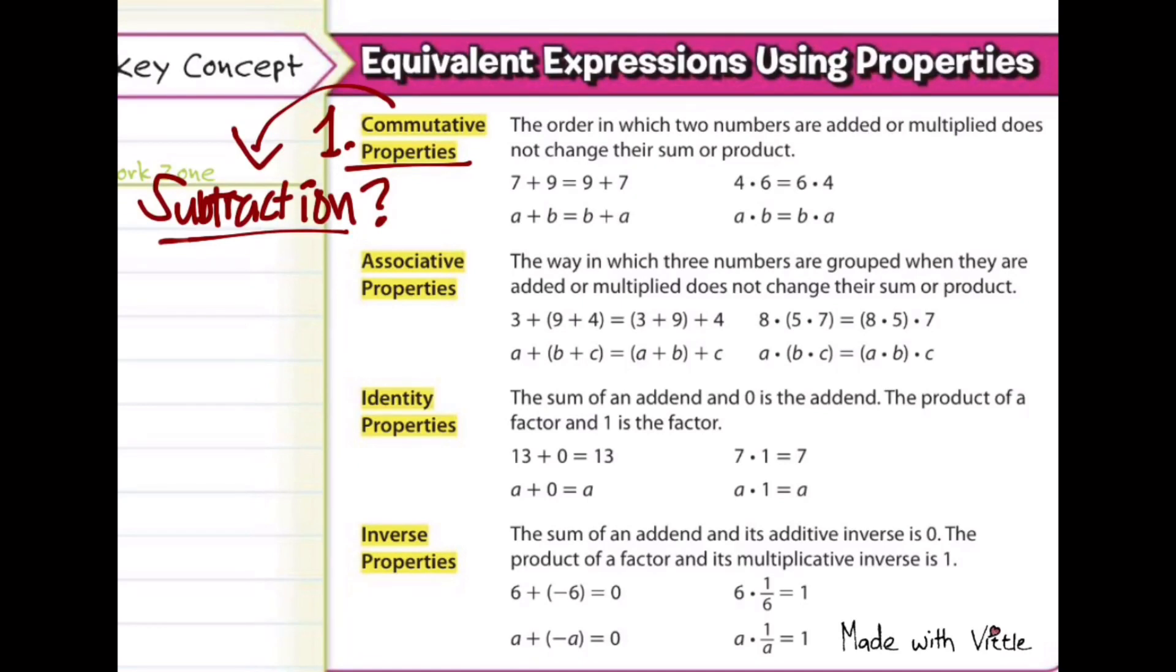Now, is it possible for us to apply commutative property in subtraction? Let's find out. So if I have 9 minus 5, we know that's going to be positive 4. What about if I switch them around? The order of 9 minus 5. We'll have it as 5 minus 9.